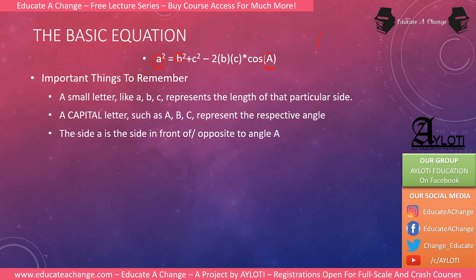Just as an example, take a rough triangle. This is angle A. Whichever is angle A, the side directly in front of it — opposite to it — is side a. So angle A corresponds to side a opposite it.